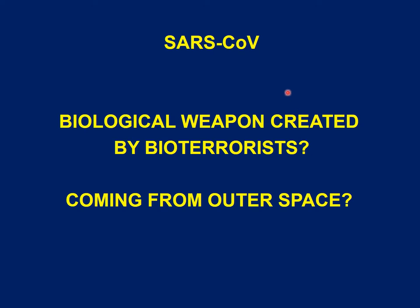Let's start with the two most likely scenarios. The first one is that SARS is a biological weapon created by bioterrorists, and the second is that it comes from outer space. But seriously, this is not the case — this is a very serious video. I'm going to give you reliable information on coronavirus biology, and not these types of hypotheses that sometimes arise from a non-specialized public.